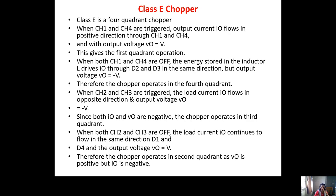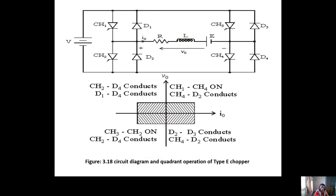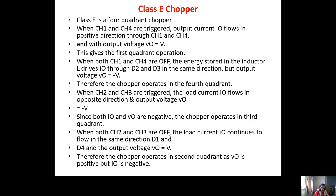Class E chopper is a four-quadrant chopper with four choppers and four diodes. It consists of two Class D choppers connected through the middle of the load. CH1 and CH4 are connected in one configuration and CH2 and CH3 in another.